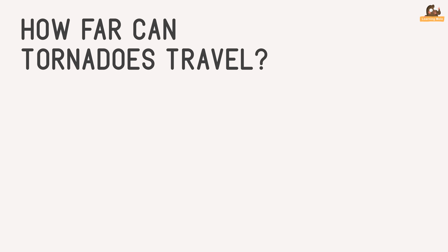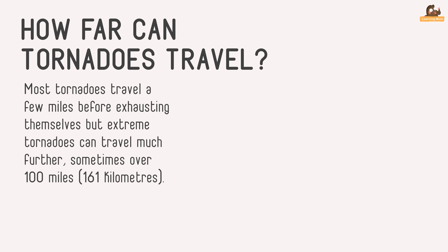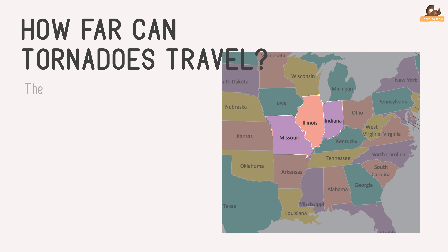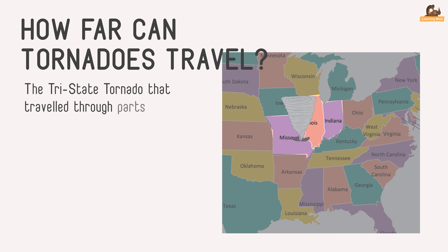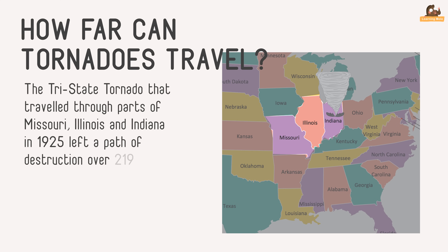Extreme tornadoes can travel much further, sometimes over 100 miles or 161 kilometres. The Tri-State tornado that travelled through parts of Missouri, Illinois and Indiana in 1925 left a path of destruction over 290 miles or 352 kilometres long.